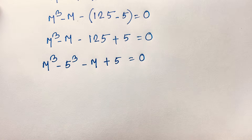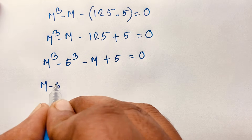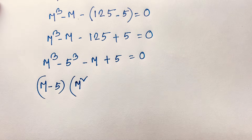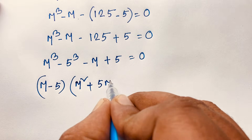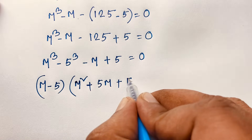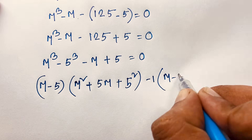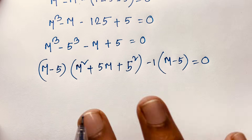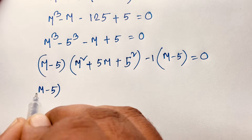Using the difference of cubes formula: a cubed minus b cubed equals (a minus b)(a squared plus ab plus b squared). Here a is m and b is 5, so m cubed minus 125 factors as (m minus 5)(m squared plus 5m plus 25). The remaining terms give minus 1 times (m minus 5), so (m minus 5) is common.